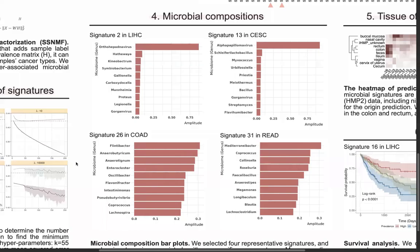Diving into those signatures, signature 2 from liver cancer has the top virus as the Orthohepadnavirus, which is already well known to be highly associated with liver cancer. For signature 13 in cervical cancer, the top microbe is HPV. Notably, signatures 2 and 13 are only identified when using the observed frequency transformation method — using relative abundance alone, we cannot identify these important viruses. For signatures 26 and 31, the microbes are common colorectal cancer-associated microbes.